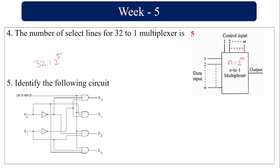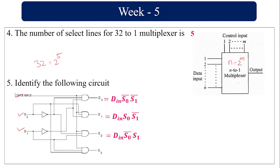Identify the following circuit. So this is the circuit they have given with one data input D_in, and select lines S0 and S1. I can write D0 = D_in·S̄0·S̄1, D1 = D_in·S0·S̄1, D2 = D_in·S̄0·S1, and D3 = D_in·S0·S1. So this is nothing but a 1-to-4 demultiplexer: 1 input, 4 outputs, and 2 select lines.